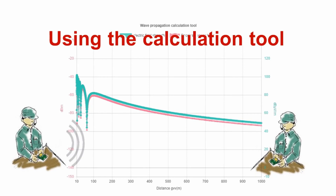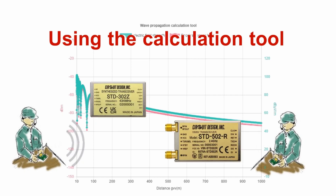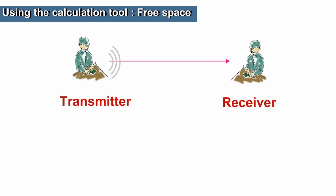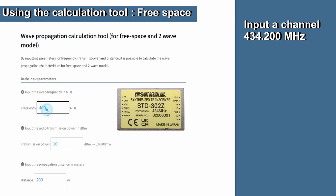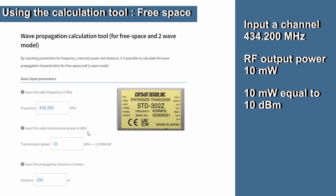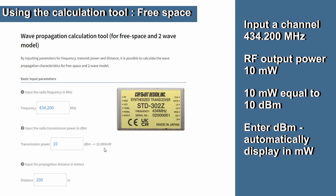I will now show how to use the calculation tool. For ease of comparison, we will run the simulation using the STD302Z 434MHz and STD502 2.4GHz radio modules as an example. Let's start with free space and input the parameters. When using the STD302Z 434MHz, we can input a channel, for example 434.200MHz. The STD302Z RF output power is 10mW. Note that the tool requires you to input the value as dBm. However, as 10mW is the same numerically, we can just enter 10 here.